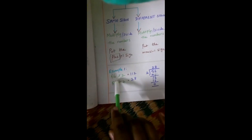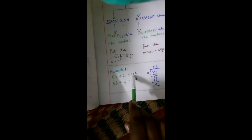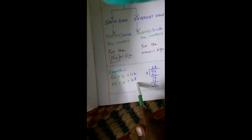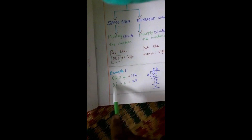Move on to Example 1: 56 times 2. Both 56 and 2 are positive — they have the same sign. So the answer gets a plus sign. Multiply: 2 times 6 is 12, carry 1; 2 times 5 is 10, plus 1 is 11 — answer is 112. Now 56 divided by 2: in the 2 times table, 2 twos are 4; 5 minus 4 is 1, bring down 6 to get 16; 2 eights are 16, remainder 0. So 56 divided by 2 equals 28. Both sums have the same sign, so I put a plus sign.